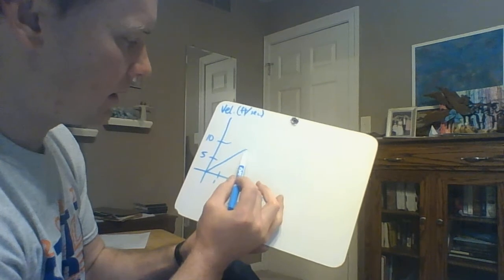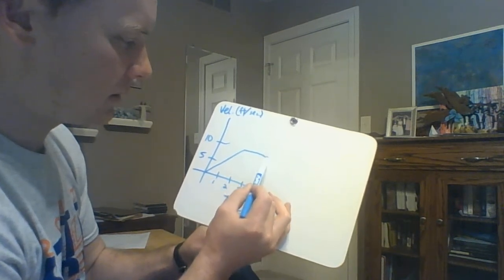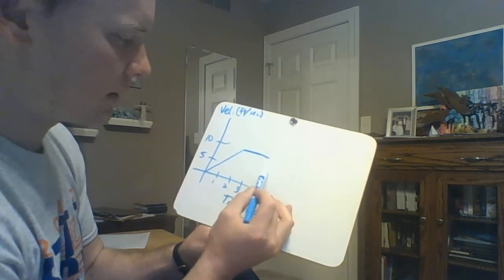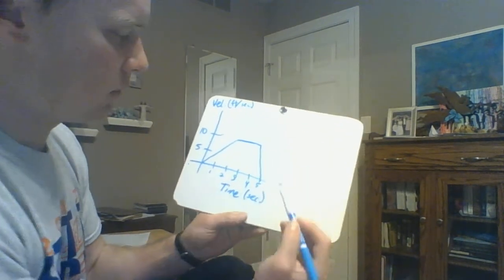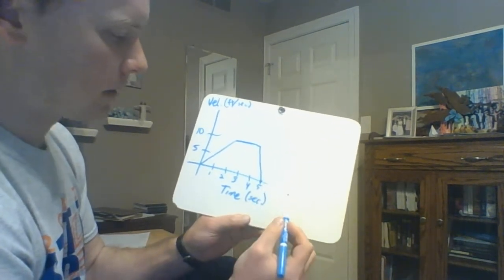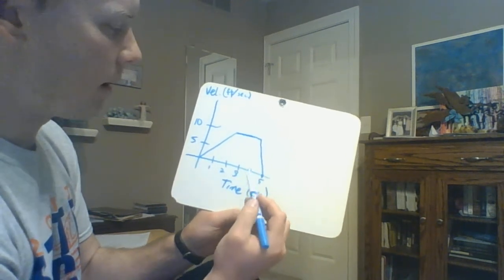Then I'm going at a constant speed of 10 feet per second for 2 seconds. And then I slow down to a stop at 5 seconds. So just a basic velocity-time graph.